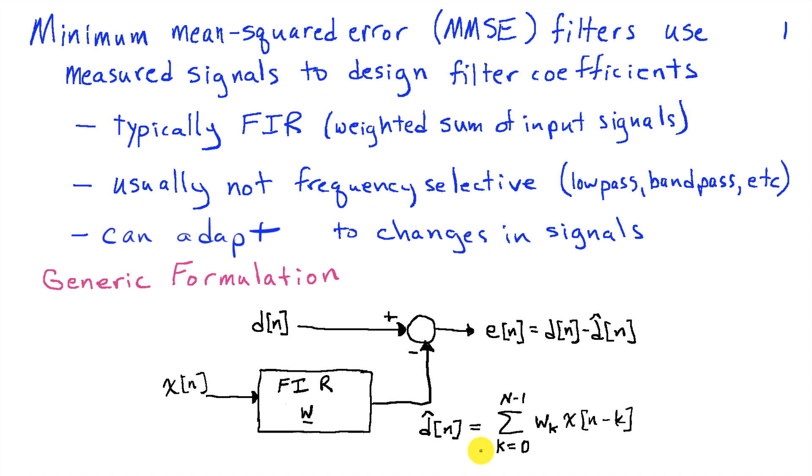The filter coefficients themselves are w sub k. And our goal is to find the filter that will take x of n as an input and try to approximate D of n. So we're going to call that approximation that comes out of the filter D hat of n. It's just an FIR filter applied to the input.